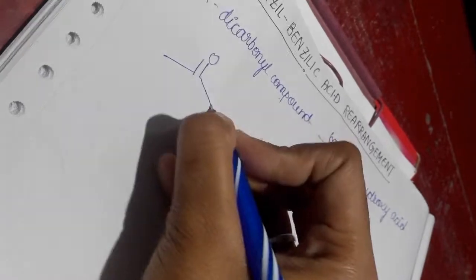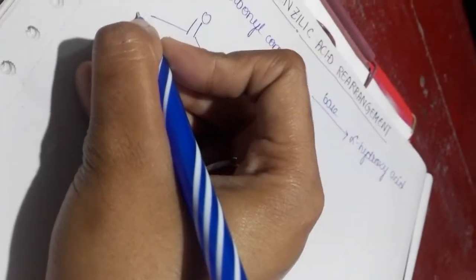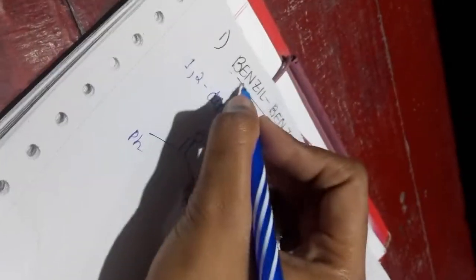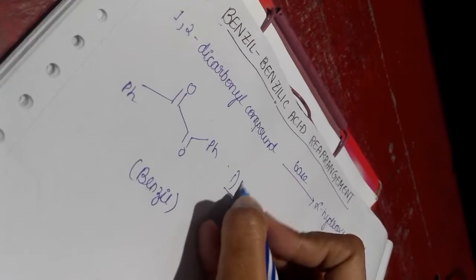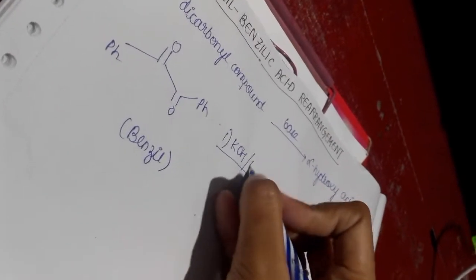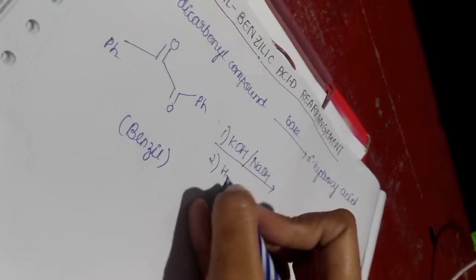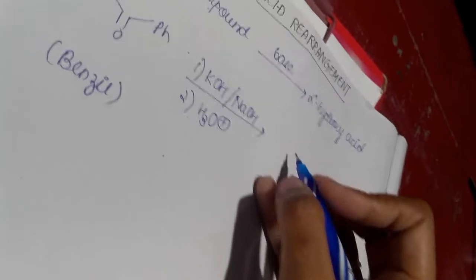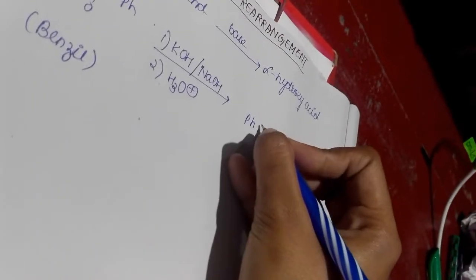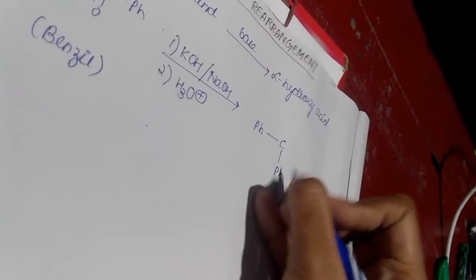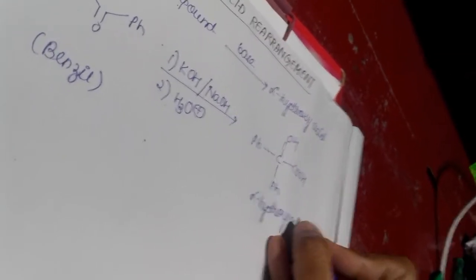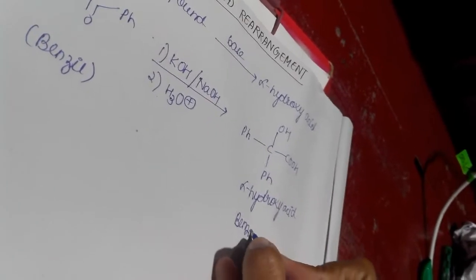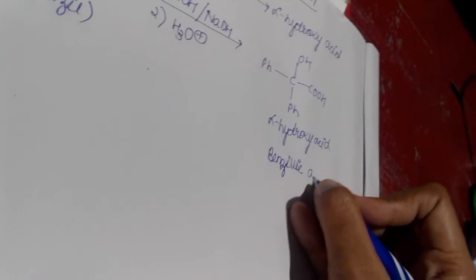To elaborate it I would like to show it with the mechanism itself. So 1,2-dicarbonyl compound will be benzil, as the name suggests. This is benzil or the 1,2-dicarbonyl compound and to this we add base, the base may be potassium hydroxide or sodium hydroxide, and secondly if we add H3O+ to it, what we get is the product will be alpha-hydroxy acid and this is called benzilic acid.